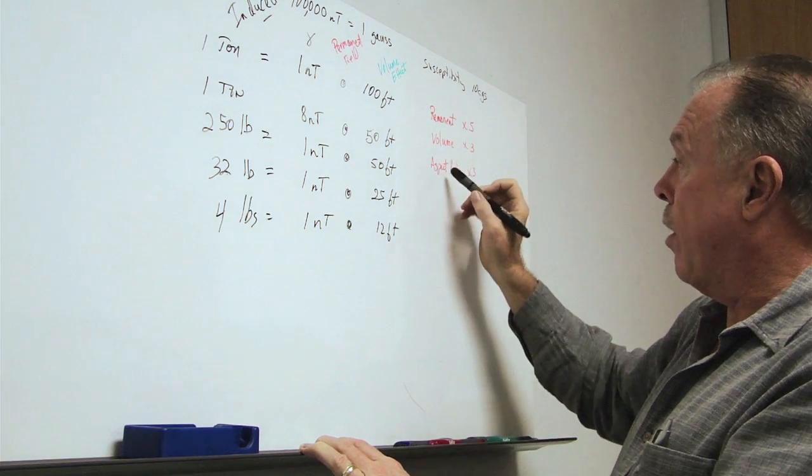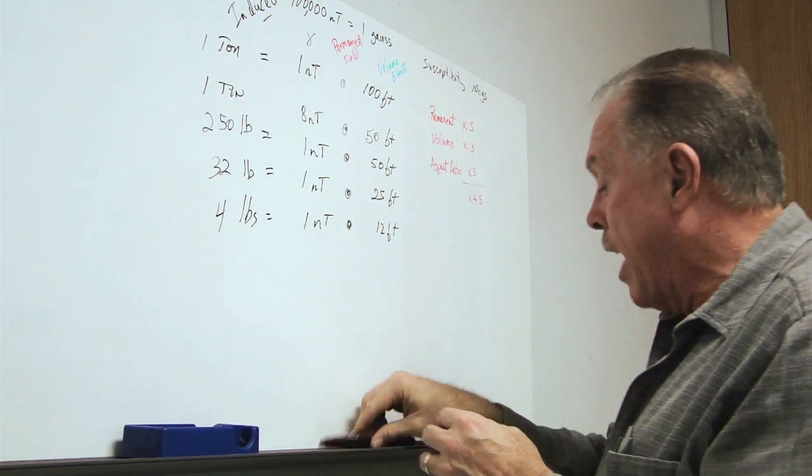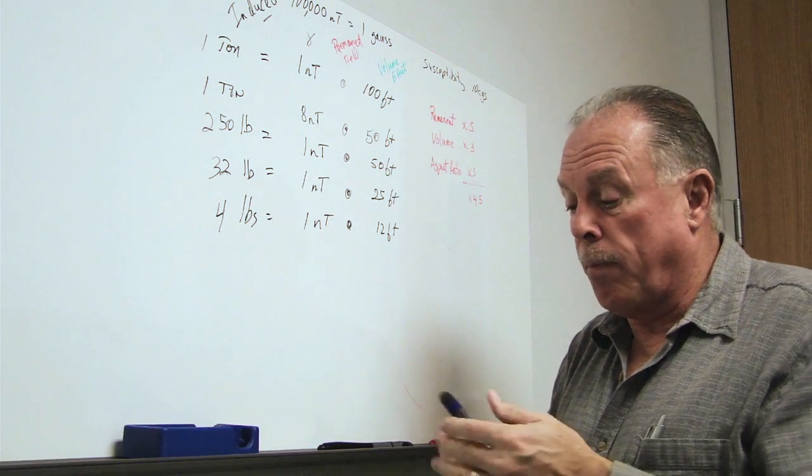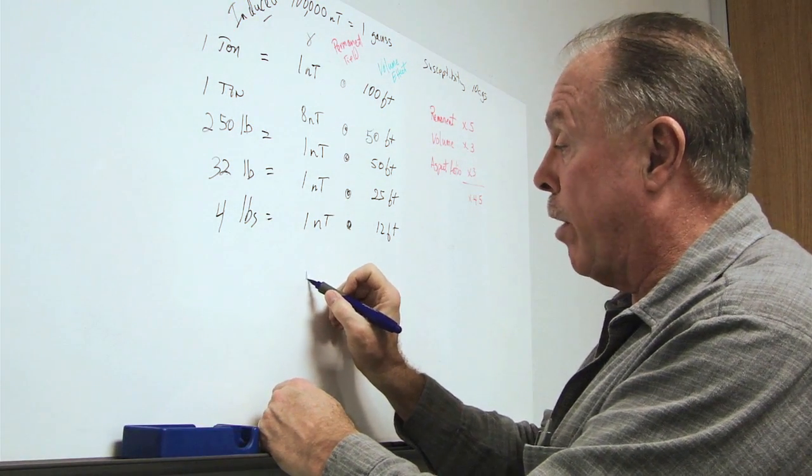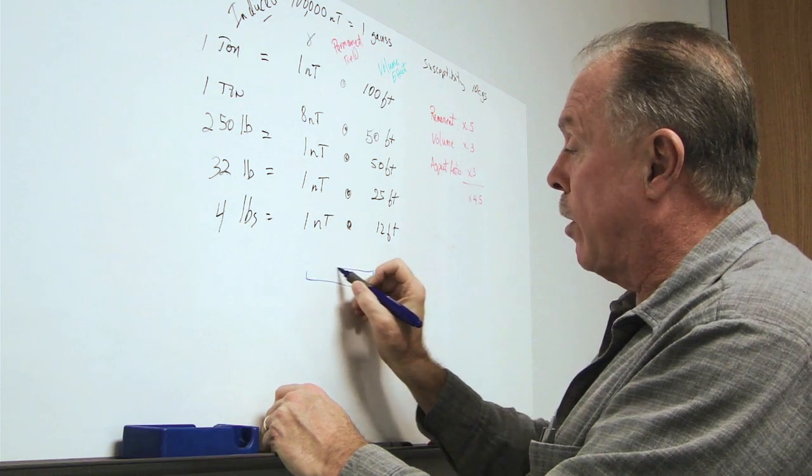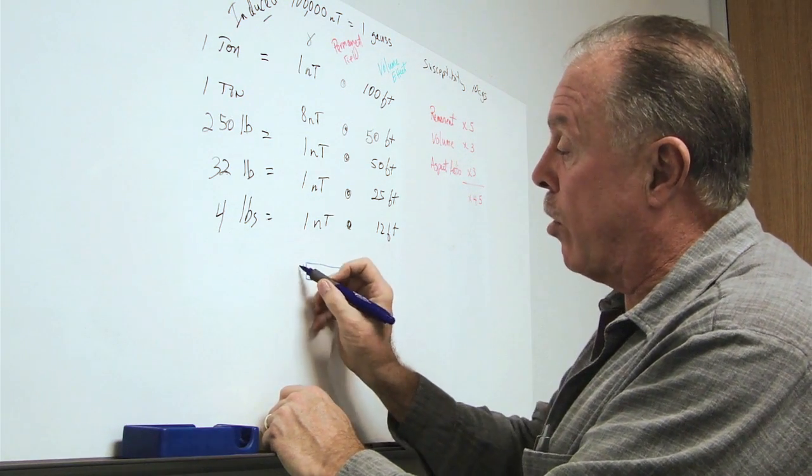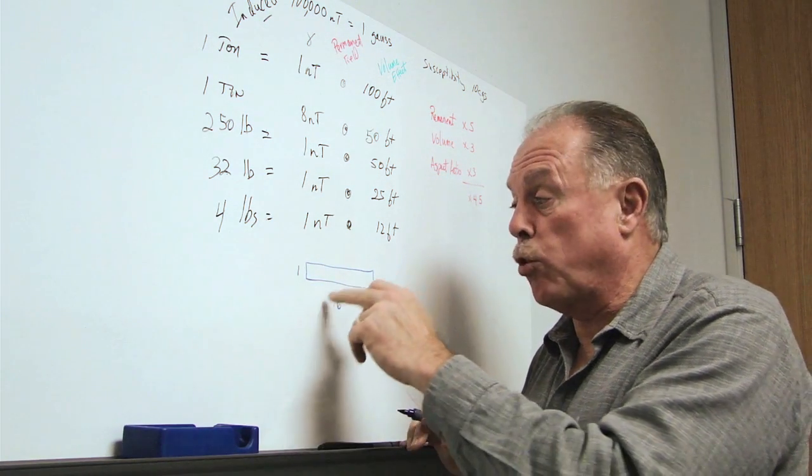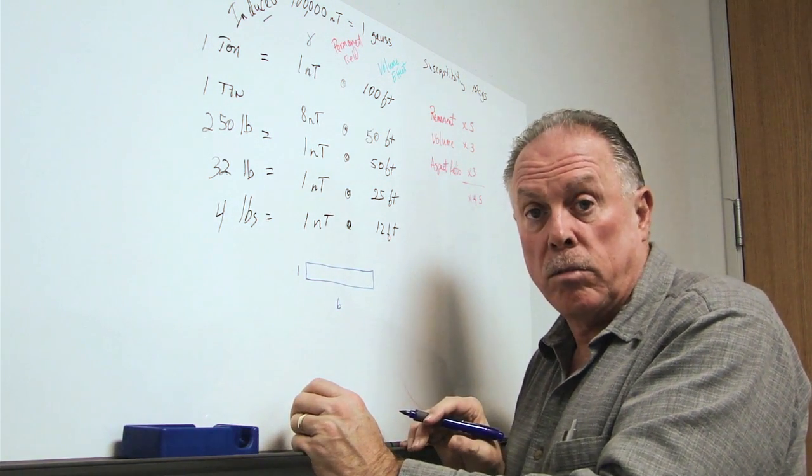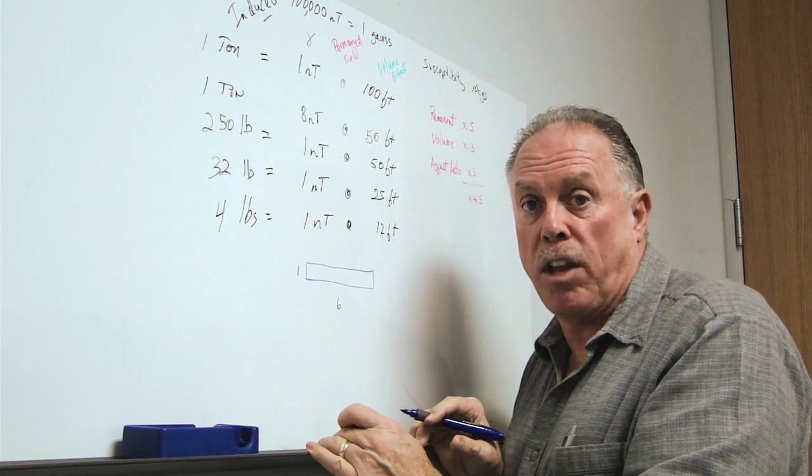There's one other amplifier and it's called aspect ratio. And it has to do with the fact that if an object has an aspect inequality, for instance, let's say we're looking at something that is six times longer than it is in diameter. This is true of most ordnance, most types of projectiles that fly through the air.